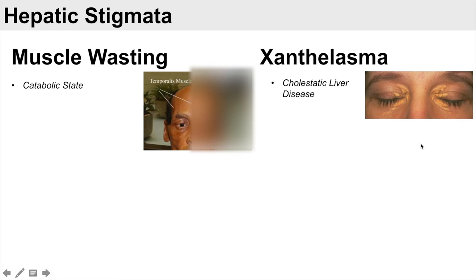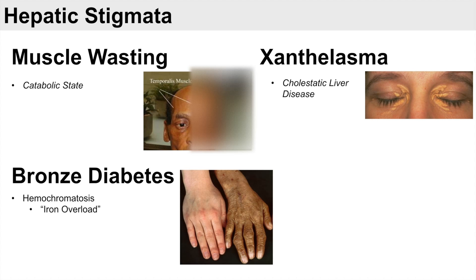Another sign is bronze diabetes. It is called bronze diabetes because of the discoloration of the skin, which you can see in the image showing quite a difference in skin coloration. Bronze diabetes is associated with hemochromatosis, a genetic condition causing iron overload. Iron deposits also occur in the pancreas, leading to problems in insulin production and secretion — hence the diabetes. So in these patients you see not only a bronzing of the skin but also diabetes.